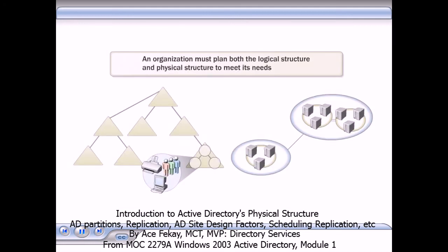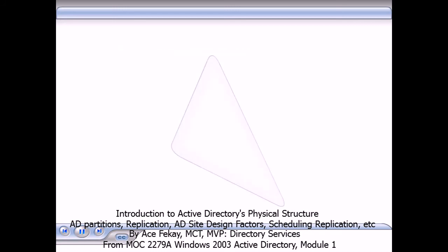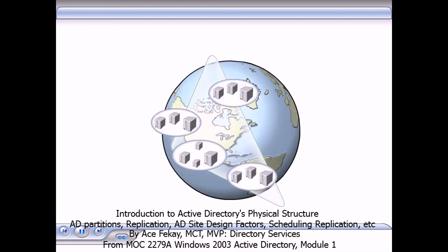An organization must plan both the logical structure and physical structure to meet its needs. For example, if your organization needs only one domain but has offices around the world, you may decide to create multiple sites to keep the replication and logon traffic within the site. In this case, you can configure replication between sites to occur during the hours when other network traffic is lightest.